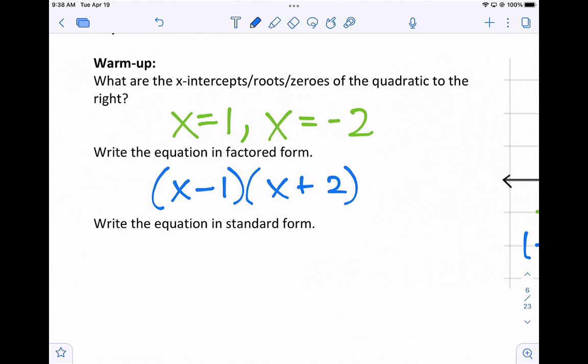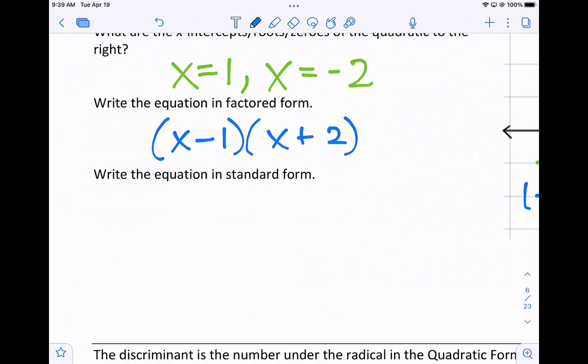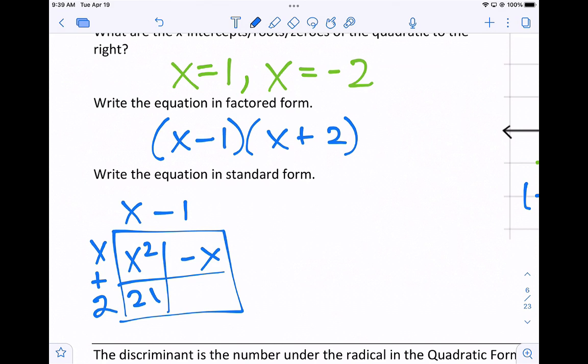Three, write the equation in standard form. Standard form is when you multiply it out. We can use the box right here. x minus 1, x plus 2. We'll get x squared, negative x, 2x, and negative 2.